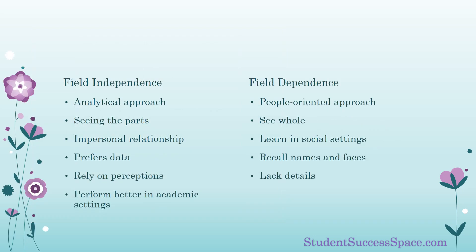The field independent individual takes an analytical approach to perceive things. They see objects in parts versus a whole. These individuals also tend to have a more impersonal relationship with the world — they prefer data, numbers, and information over relationships or social settings. They rely more on their own perceptions to make judgments. Cohen in 1968 found that field independent students were actually able to perform better in academic settings than their field dependent counterparts.